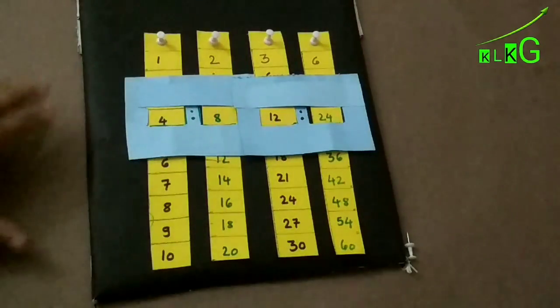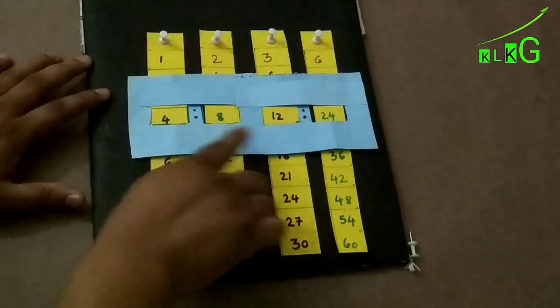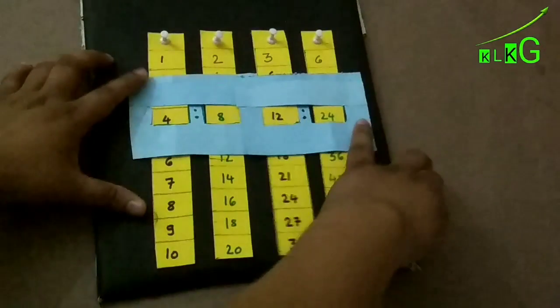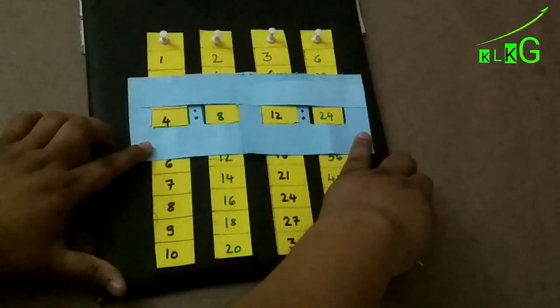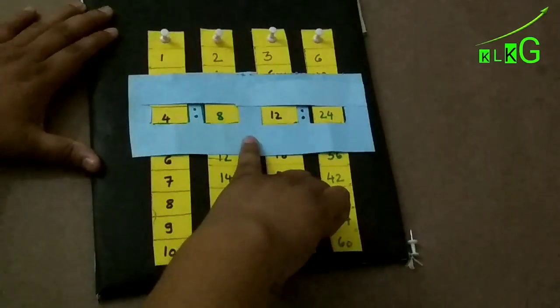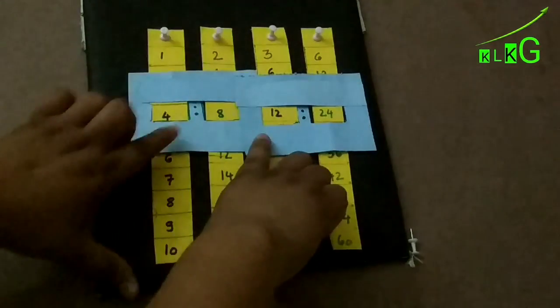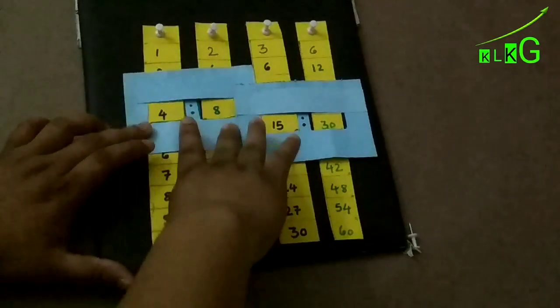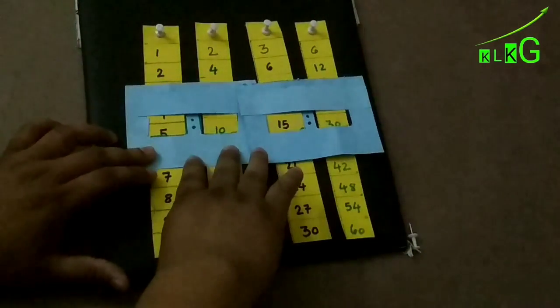Wait, the project is not over. Now we are going to do proportion. As you can see, 4 is to 8 is equal to 12 is to 24. And you can see that the simplest form would be 1 is to 2 equals 3 is to 6.